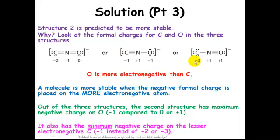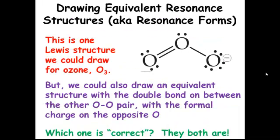Structure three is probably the least contribution, and structure one makes some small contribution. We have established that we want the negative formal charge on oxygen, and we want to minimize as much as possible the negative formal charge on carbon. Nitrogen has plus one formal charge in all three structures, so we can't do anything about that. Now let's talk about drawing equivalent resonance forms.